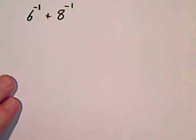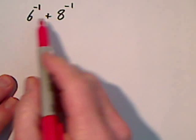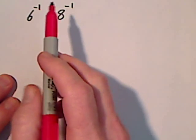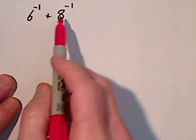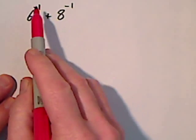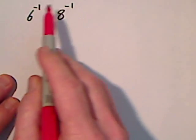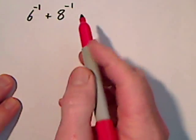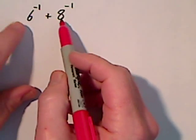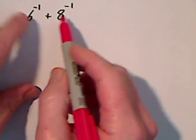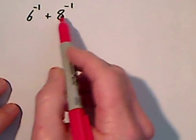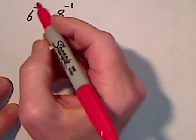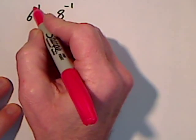You cannot just add these two numbers because the bases are not the same when you have exponents. You have to have like bases in order to add or subtract exponents.